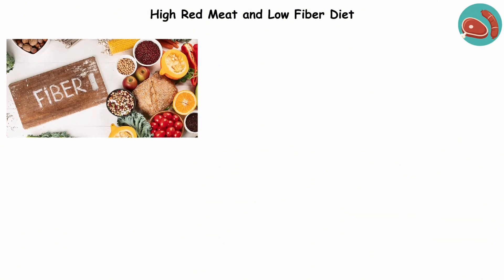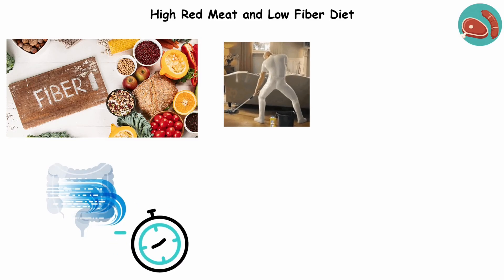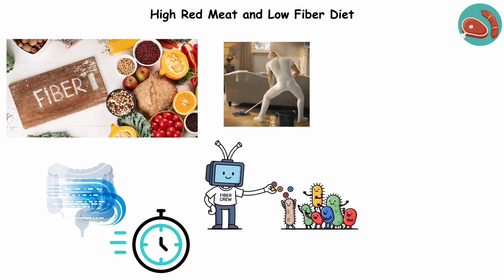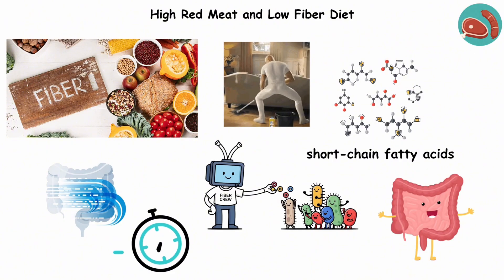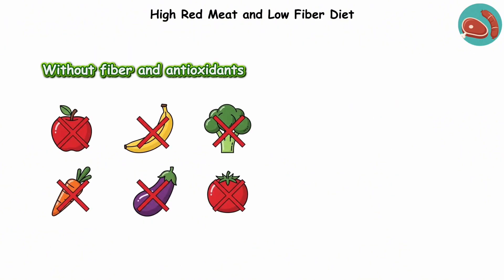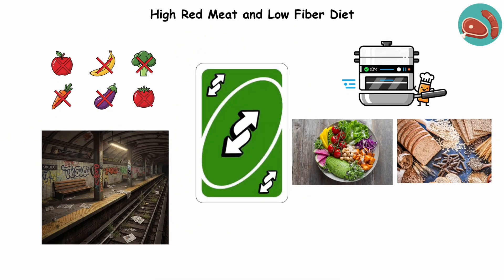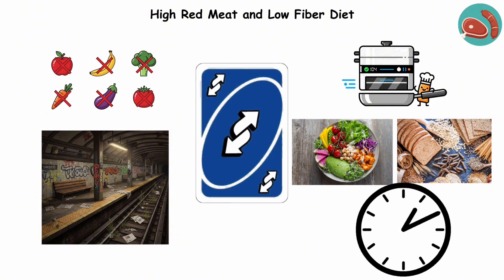Fiber, on the other hand, is your gut's cleanup crew. It speeds things along, reducing the time those toxins hang out in your intestines, and even feeds good bacteria to produce short-chain fatty acids that protect your colon cells. Without enough fiber and antioxidants from fruits and veggies, your digestive tract is basically a dirty subway station. Swapping plants, whole grains, and smarter cooking methods, and suddenly, that station runs like clockwork.